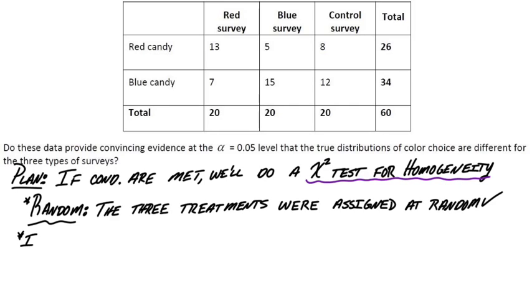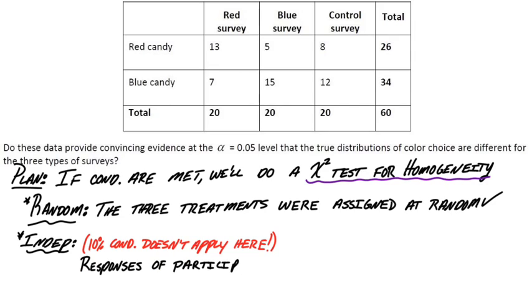Okay, and what about the independence condition? One thing I want to point out here, the 10% condition does not apply in this case. And in general, it typically doesn't apply to experiments because it's not like we randomly sampled people from some greater population. It was just the volunteers who signed up to be in this experiment. So since we didn't get a random sample of people to be in the experiment, we just had people sign up and then we assign them to treatments, the 10% condition doesn't apply.